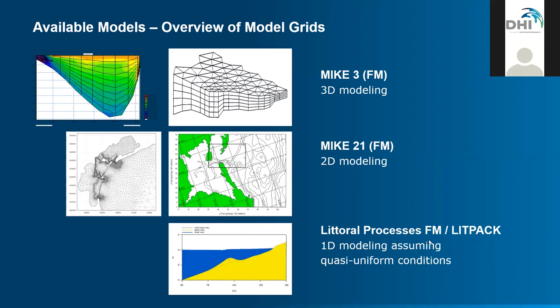For the Littoral Process FM model and LITPAC, it is one-dimensional modeling assuming quasi-uniform conditions exist along the coast. That means there are no sudden variations in profile geometry, wave conditions, etc., which allows treating each profile independently from neighboring profiles. We only need to specify the bathymetry through the variation of bed levels along the profile. A bar in the profile and the surface elevation can also be seen.